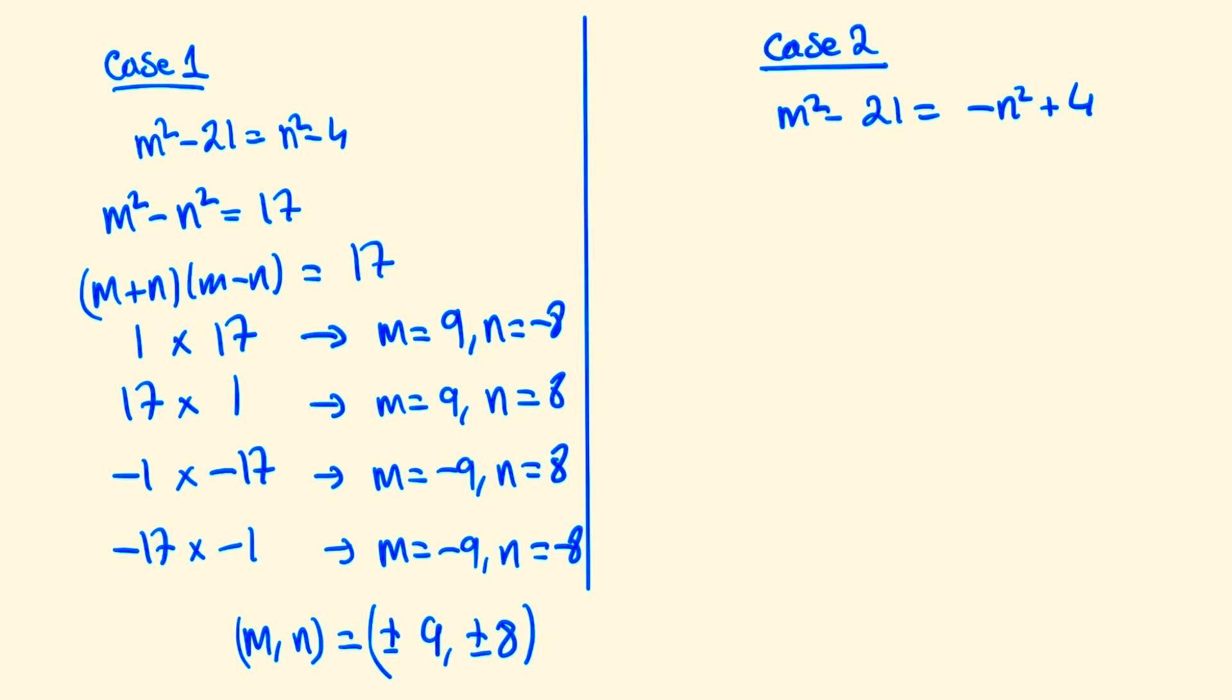And now solving Case 2, we have m^2 + n^2 = 25. This is the Pythagorean triple 3^2 + 4^2 = 5^2. So here we have the solutions (m,n) being (±3, ±4) or (±4, ±3).